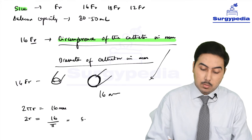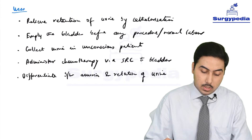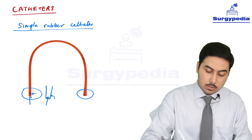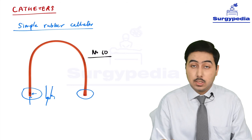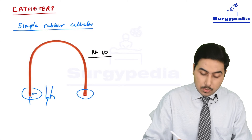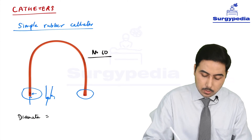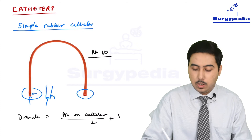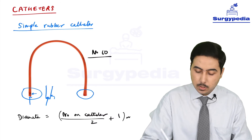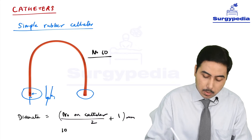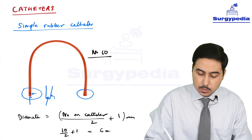In a simple rubber catheter, please note this point as well — we also have a number, say number 10. This indicates the diameter, but it does not mean the diameter is 10 mm directly. This is the English scale. To derive the diameter in this scale, the formula is: diameter equals the catheter number divided by 2, plus 1, in millimeters. So for a number 10 simple rubber catheter, the diameter is 10 divided by 2 plus 1, which equals 6 mm.